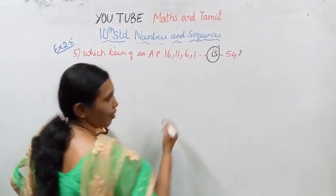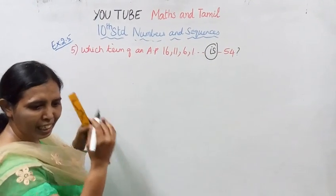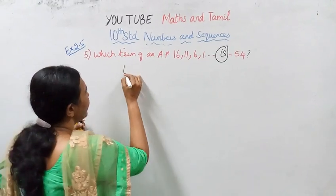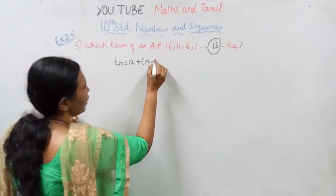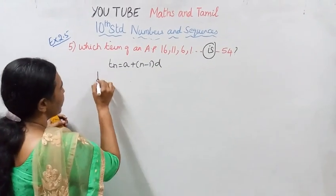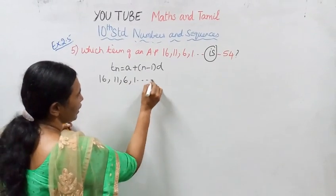Which term? We need to use the formula TN equal to A plus N minus 1 into D. Now, 16, 11, 6, 1, etc.